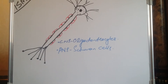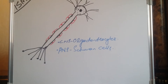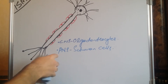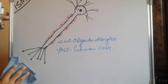If these cells are in the central nervous system and providing myelination, they are called oligodendrocytes. If these cells are outside the central nervous system — that is, in the peripheral nervous system — then these cells are called Schwann cells. Now we will first discuss how myelination is provided by the Schwann cell.